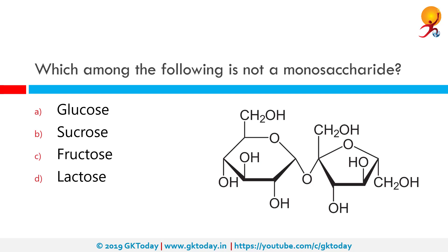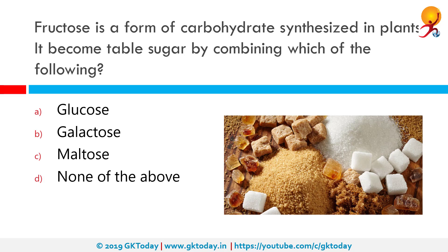Which among the following is not a monosaccharide? The correct answer is Sucrose. Sucrose is common table sugar — it is a disaccharide, a molecule composed of two monosaccharides. Fructose is a form of carbohydrate synthesized in plants, and it becomes table sugar by combining with glucose. So glucose and fructose together form table sugar.